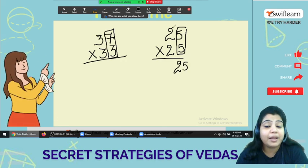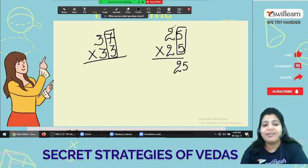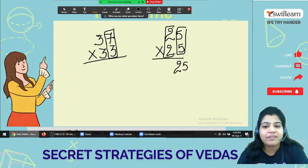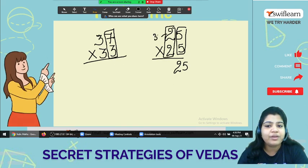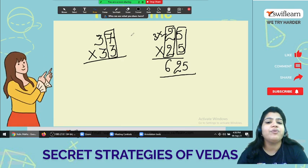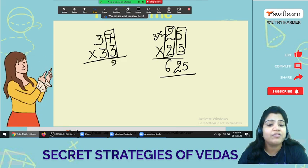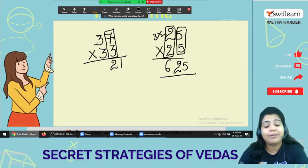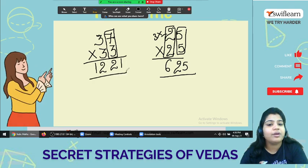5 times 5 means 25. And number and the next number successor. What is the successor of 2? That's 3. So 2 times 3 is 6. Answer is 625. The same thing we are going to apply here. 7 times 3 is 21. What is the next number of 3? That's 4. So 3 times 4 is 12. And you got your answer.